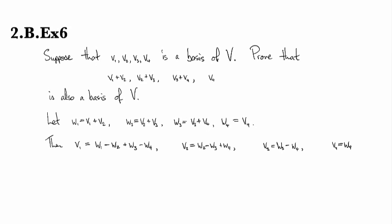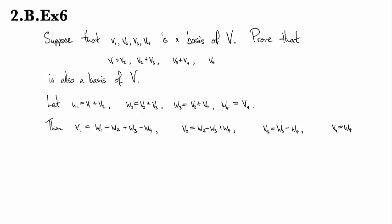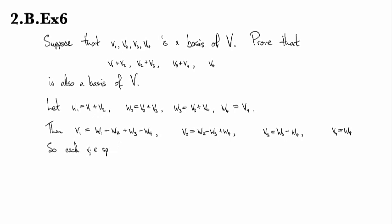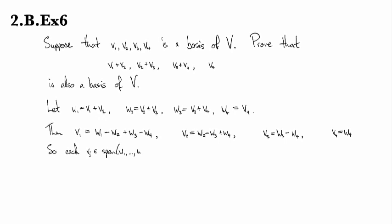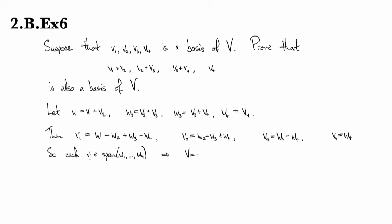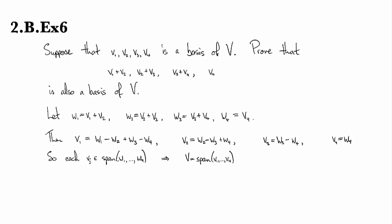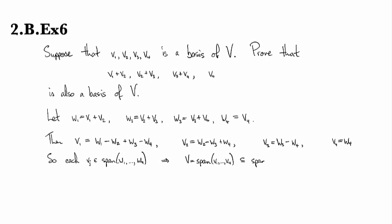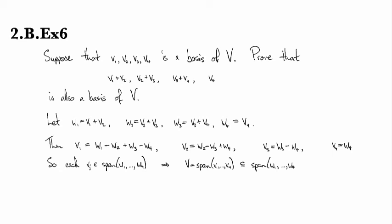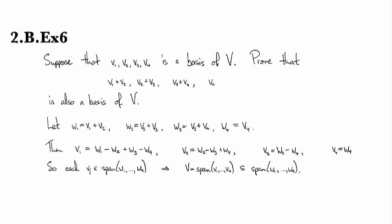So I've shown that the V's are in the span of the W's. Each Vj is in the span of the W's. That means that V, in other words, the span of the V's, is contained in the span of the W's. Because anything you can make out of the V's, well, I can make each of the V's out of the W's first, and then I've made it out of the W's. Okay, so that gives us the spanning part.